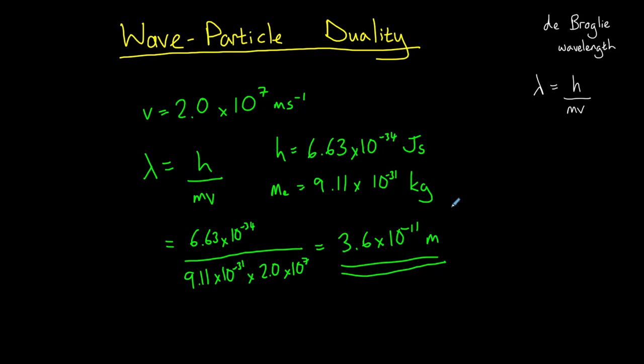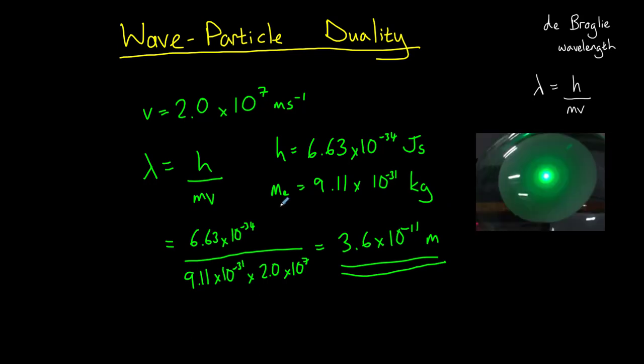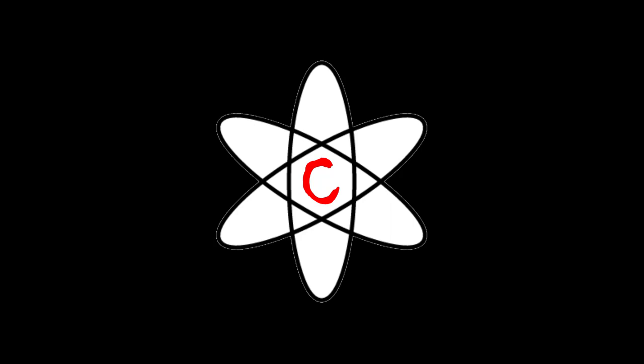Finally, let's consider what would happen to a diffraction pattern formed by a beam of these electrons if we increase their velocity. Would the fringe spacing become larger or smaller? Increasing velocity means that momentum, mv, or p, increases. And since lambda equals h over mv, that must mean that the wavelength decreases. A smaller wavelength will mean less diffraction, so the separation between the fringes will get smaller.